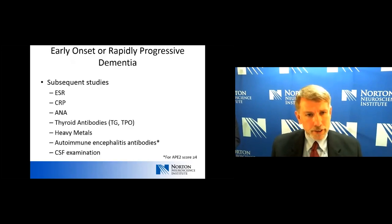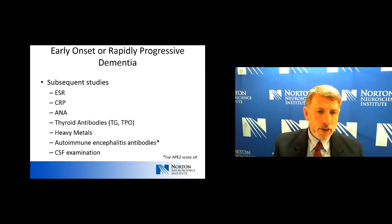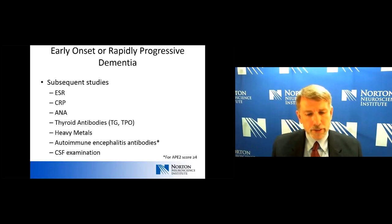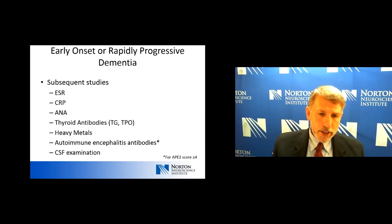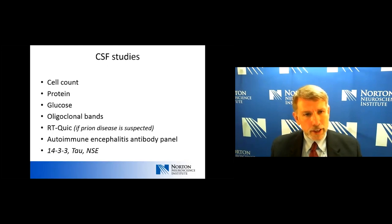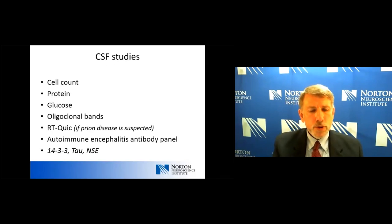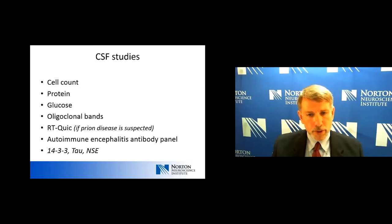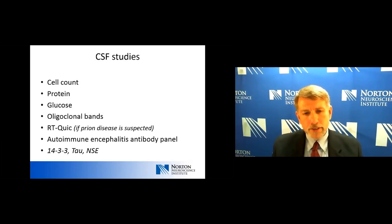If initial testing has been normal, the next round includes inflammatory markers, thyroid antibodies, heavy metals, and in the right case, autoimmune encephalitis antibodies — done in both serum and CSF. Then we'll do a spinal fluid exam. For CSF we need cell count, protein, and glucose; oligoclonal bands to look for an immune response or inflammation pointing to autoimmune encephalitis; and RT-QuIC, which is a very good study for prions if CJD or prion disease is suspected.